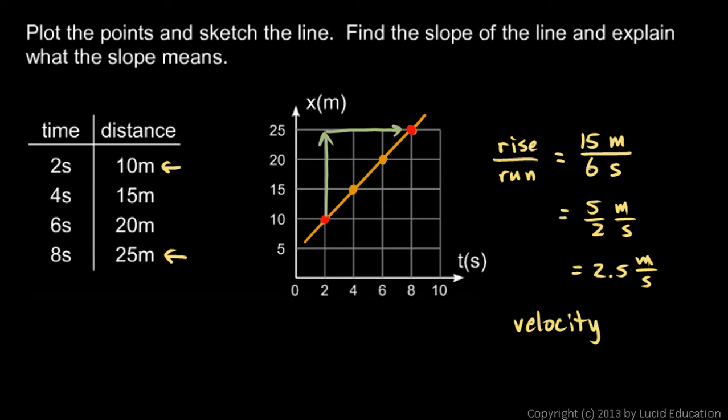So when they say explain what the slope means, that's what the slope means in this case. The slope of a position versus time graph is the velocity, because position here is measured in meters, and time is measured in seconds. And when we do rise over run, we're dividing meters by seconds. So meters per second, that gives us velocity. So the slope is 2.5 meters per second, and that represents the velocity of this object. If this object started at this position at this time, and moved at a steady speed to this position at that time, then it was moving at a speed of 2.5 meters per second.